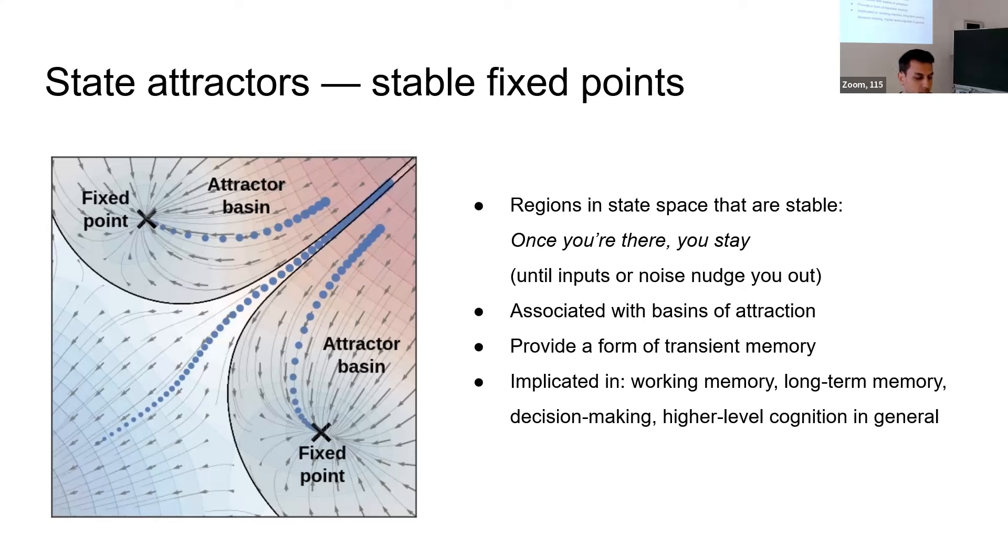One of the fundamental tools in dynamical systems is the notion of attractors. To simplify things, I'm just going to be talking about fixed point attractors, so these single vector states. These are regions in the dynamics where once you reach them, or once you even enter their basin of attraction, these regions that pull towards the attractor, well, then you stay there, at least temporarily until the inputs change, or some noise nudges you out of the attractor. Most of the time when people talk about attractors, they're talking about it as a form of transient memory. Once you stay there, you remain there. So people think this is involved in working memory, long-term memory.